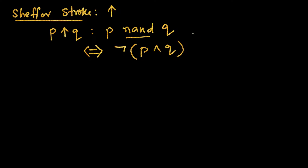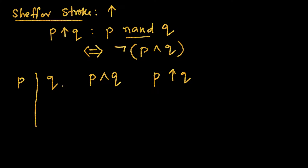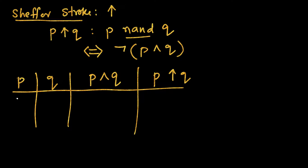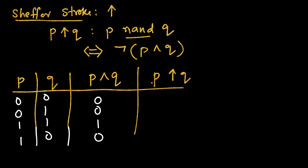Now let's draw the truth table for NAND. We have p and q, and we need to compute p AND q, and then finally p NAND q. Since we have two variables, we have four combinations: 0-0, 0-1, 1-1, and 1-0. The AND is true only when both are one, otherwise zero. The negation of that gives us: 1, 1, 0, 1. So p NAND q is false only when both are one; otherwise it's true.